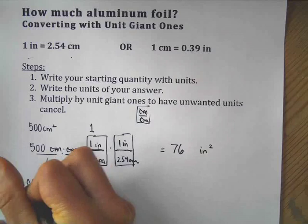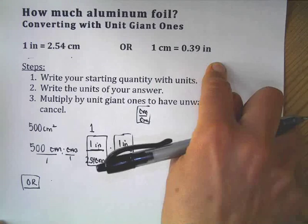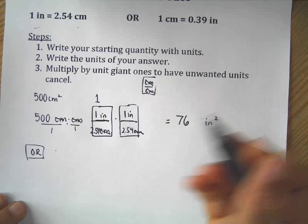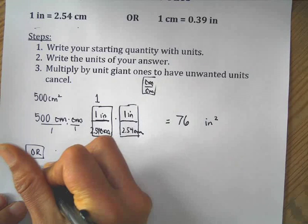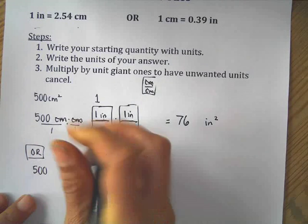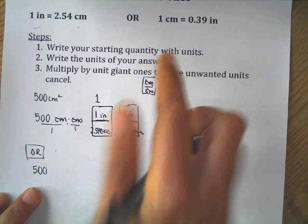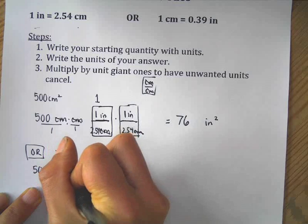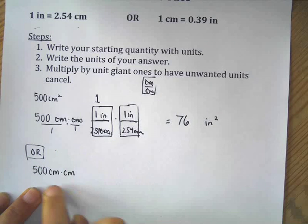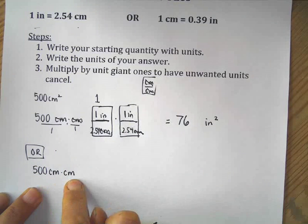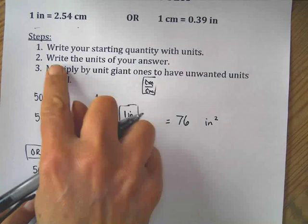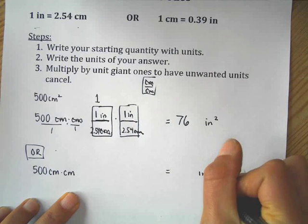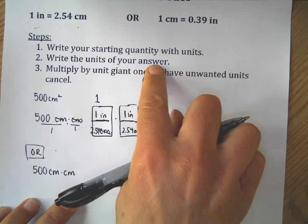Now I could have used just as simply this other conversion, but not as many people use it. But I'll just show you that it doesn't matter. As long as it's a unit giant one, you'll get the correct answer. So once again, I'm starting with my starting quantity, 500 centimeters squared. And I'm going to write it where my units are written out so I can see centimeters squared of centimeters times centimeters. I'm going to write the units of my answer, so I know where I'm headed. Inches squared.